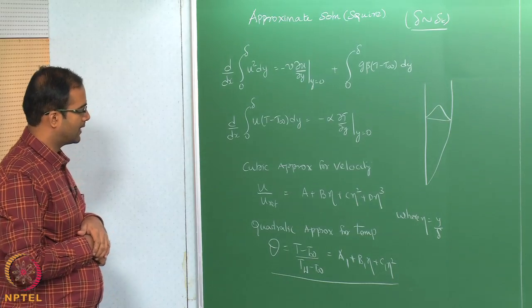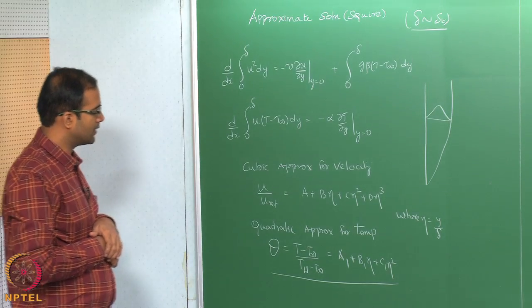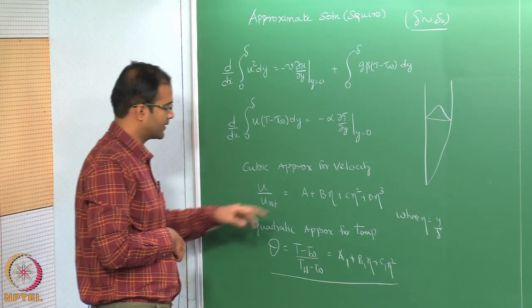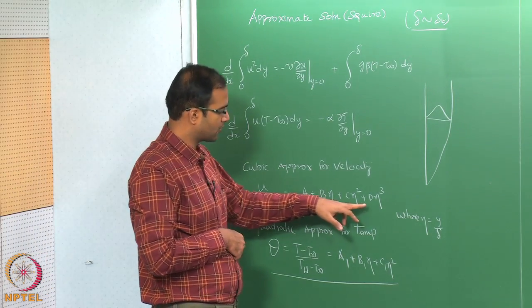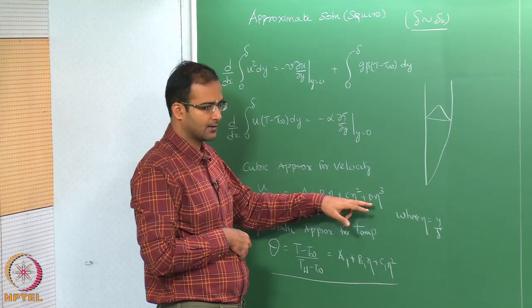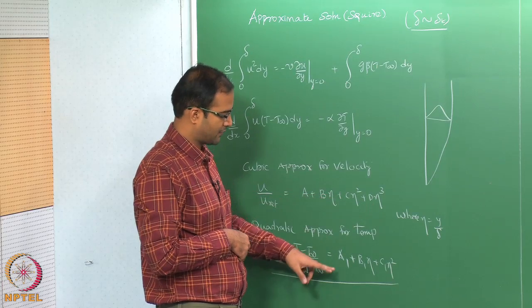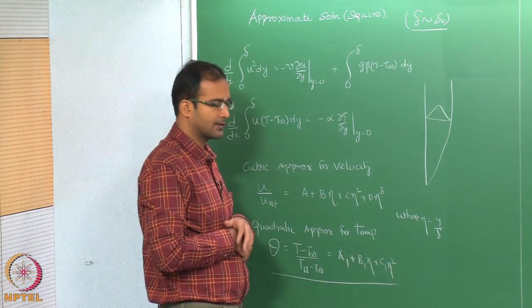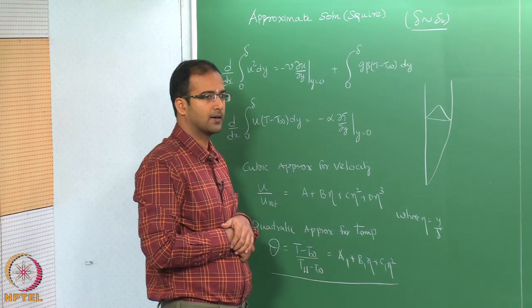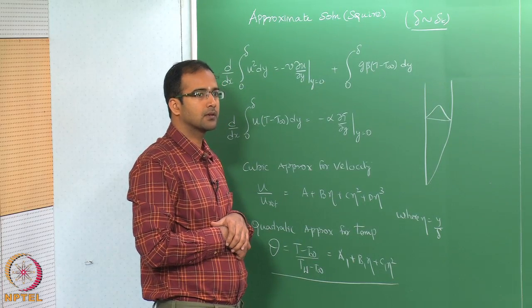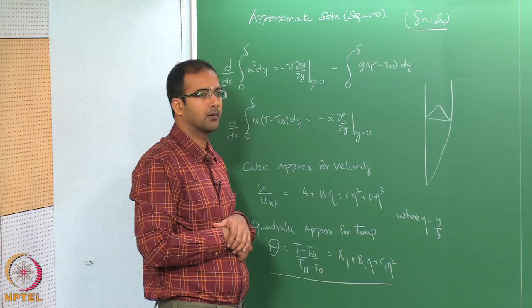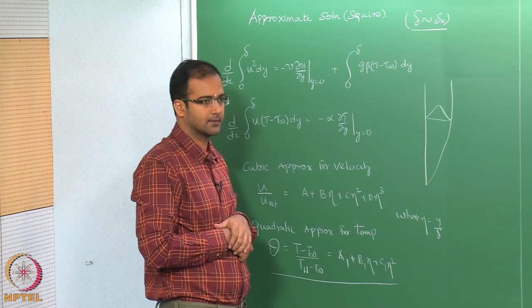Now, in order to find these coefficients — we have 4 coefficients in the velocity profile and 3 in the temperature profile — we have to write down suitable boundary conditions for them.